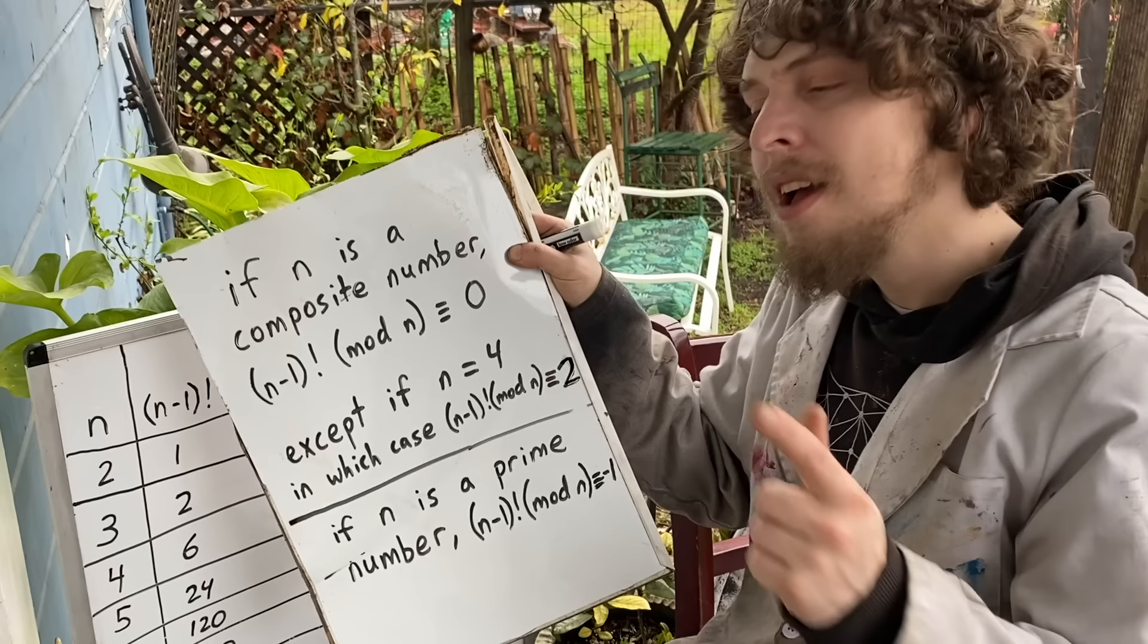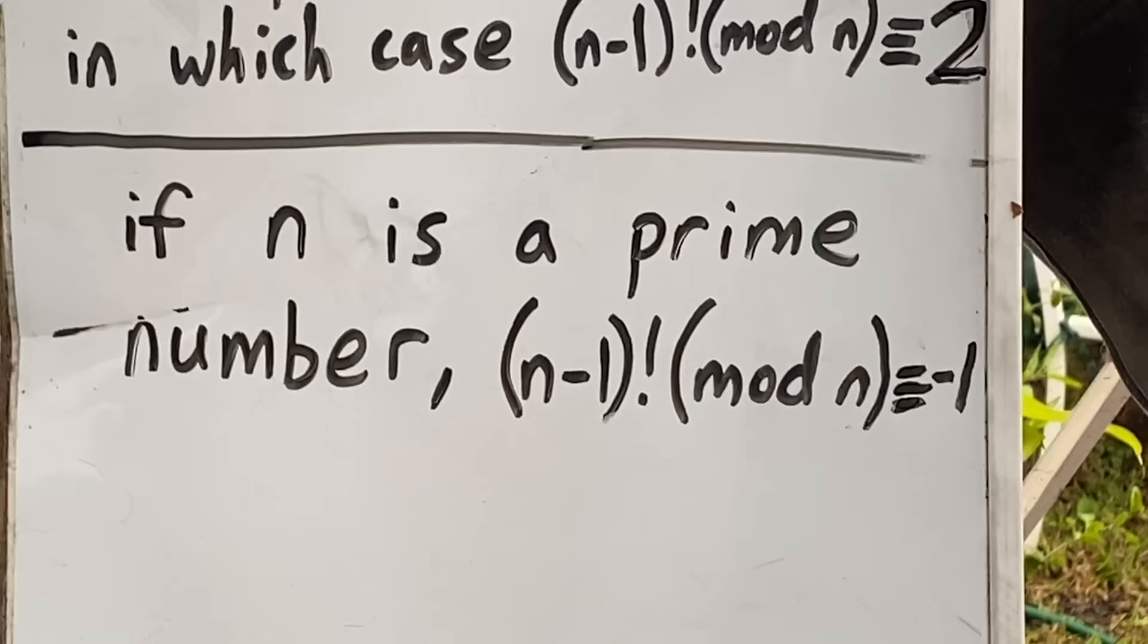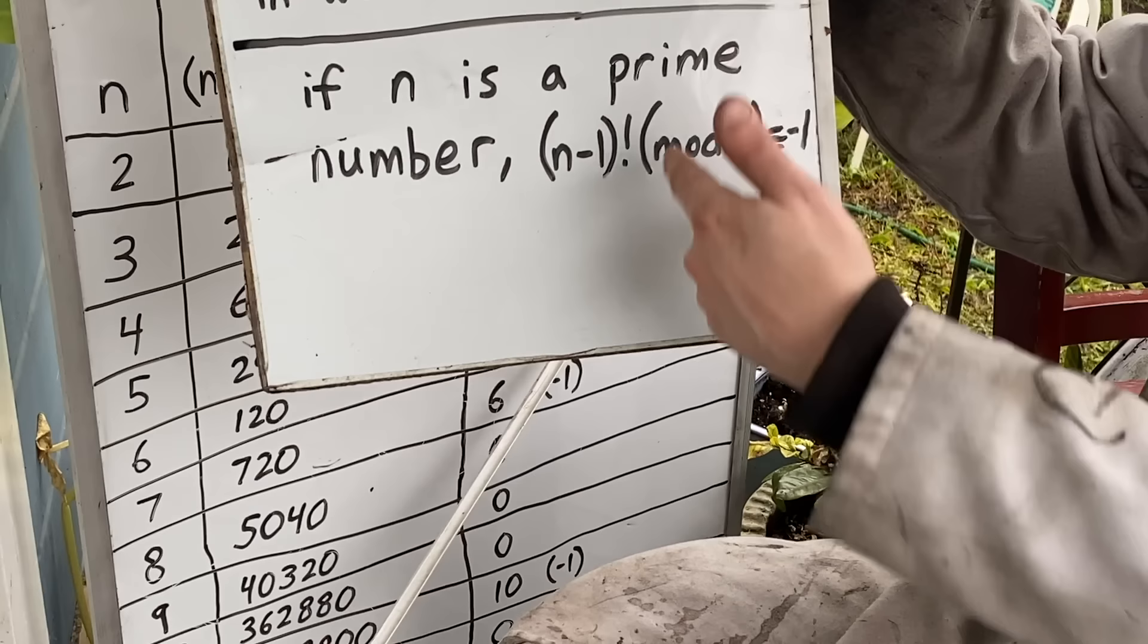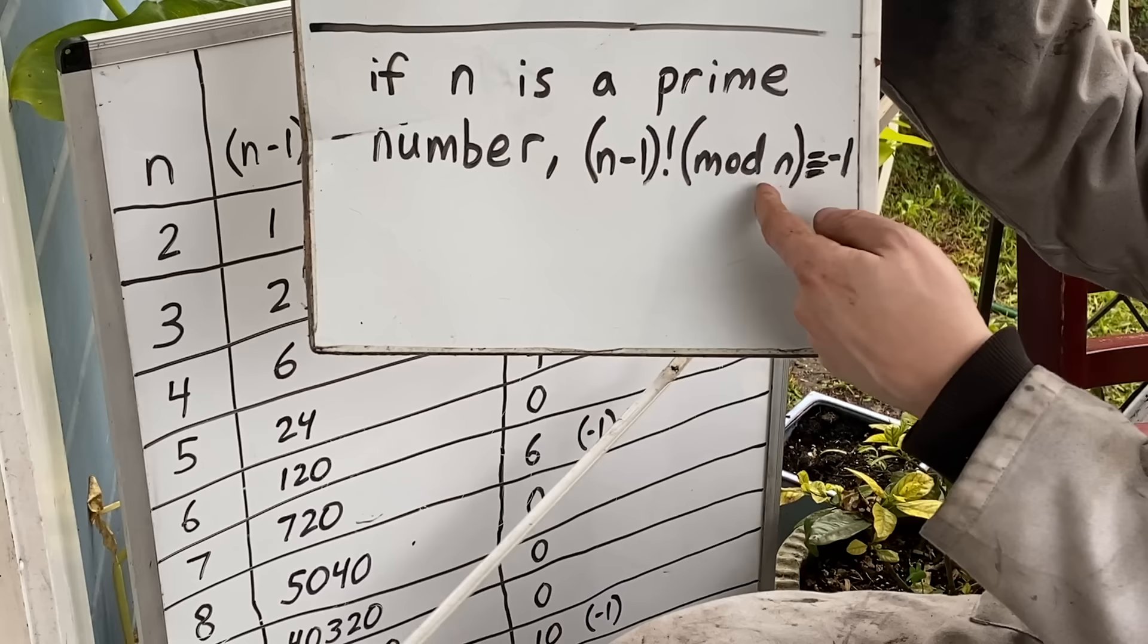This bottom result is known as Wilson's theorem, often stated in terms of if n is a whole number greater than one, it'll be a prime if and only if this identity holds. That if we multiply all of the whole numbers between one and one less than the prime and look at its result in the mod of the prime, or basically the remainder if we were to divide by the prime, we kind of get a remainder of negative one. It ends up congruent to the number one less than the prime.